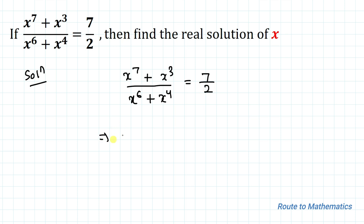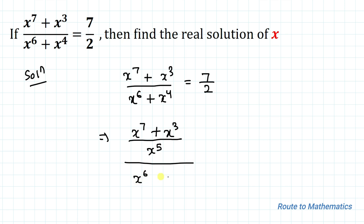In the next step, I will divide x to the power 5 in both numerator and denominator. So we have x to the power 7 plus x cubed, divided by x to the power 5, divided by x to the power 6 plus x to the power 4, divided by x to the power 5, and this equals 7 by 2.